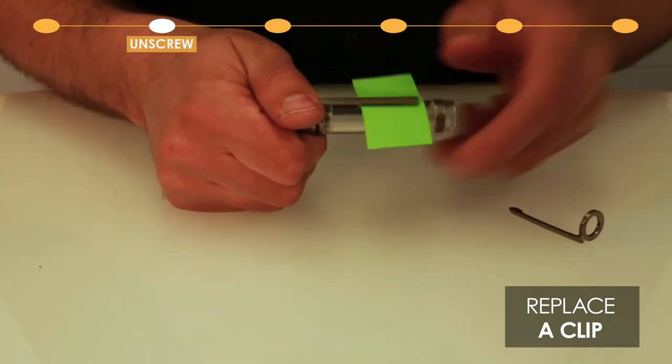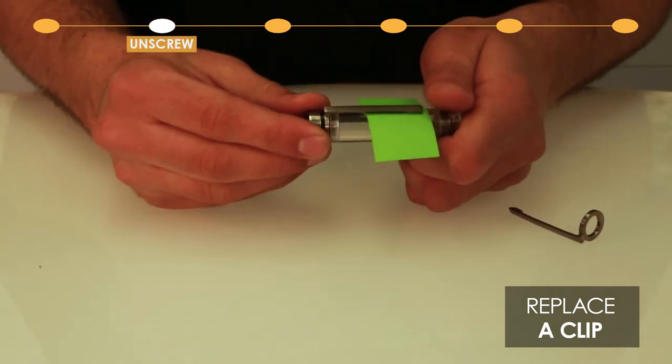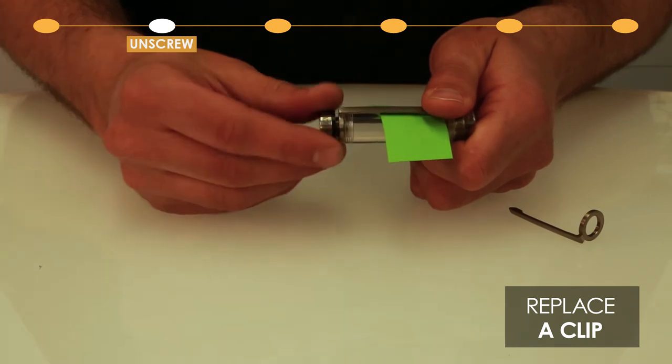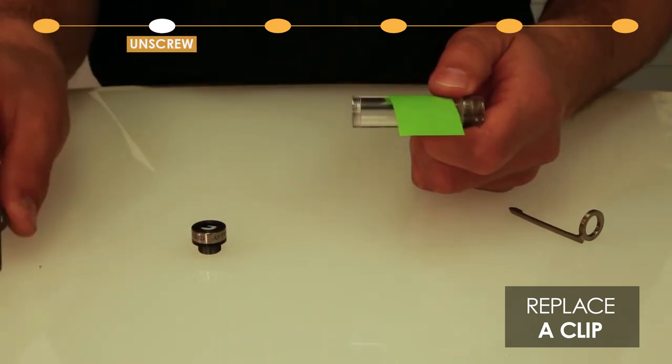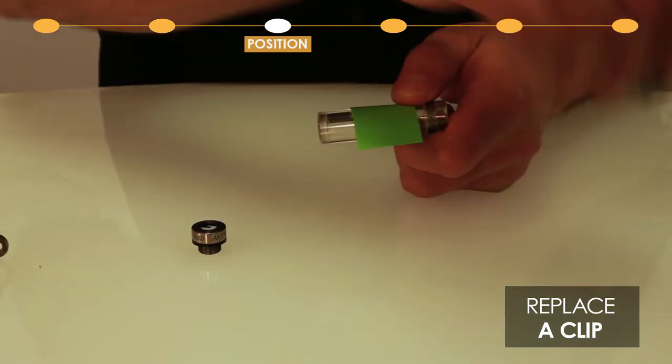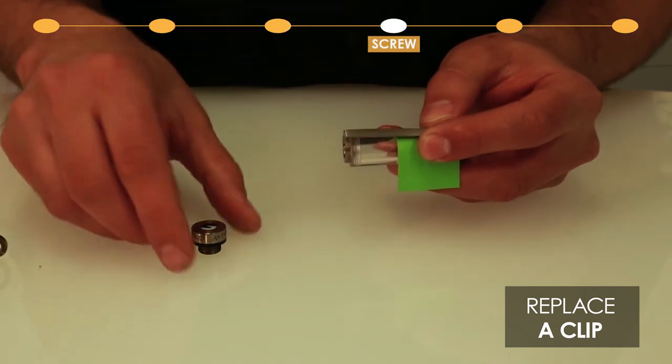Grip the cap top firmly and unscrew the cap top. Put that aside. Now you can take off the old clip and put a new clip on there. Remember to use the paper.